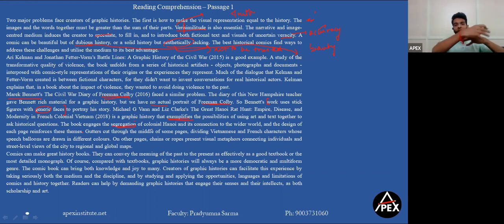So basically some pages have a demarcation like a gutter in the form of a gutter, so they put a picture of the gutter dividing Vietnamese and French characters whose speech balloons are drawn in different colors. What's a speech balloon? Let's think that this guy is a person. Okay, so this is his speech balloon. So if he's saying 'hi', right, and this guy is a French guy, maybe I'll mark this balloon in red instead. If this guy is a Vietnamese person, I'll mark this entire balloon in blue. So this way there's a clear demarcation that can be seen. These people are French people, these people are Vietnamese people. That's the kind of thing that Michael G van and Liz Clark have brought in in their Great Hanoi Rat Hunt: Empire Disease and Modernity in French Colonial Vietnam.